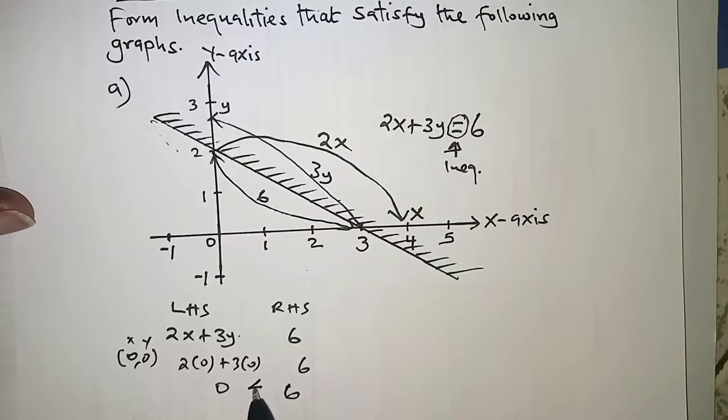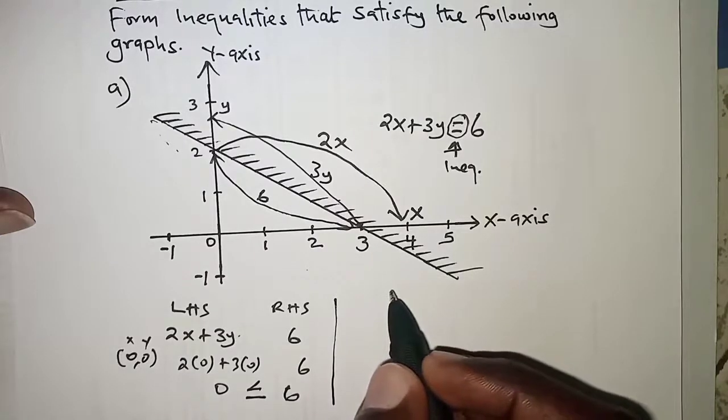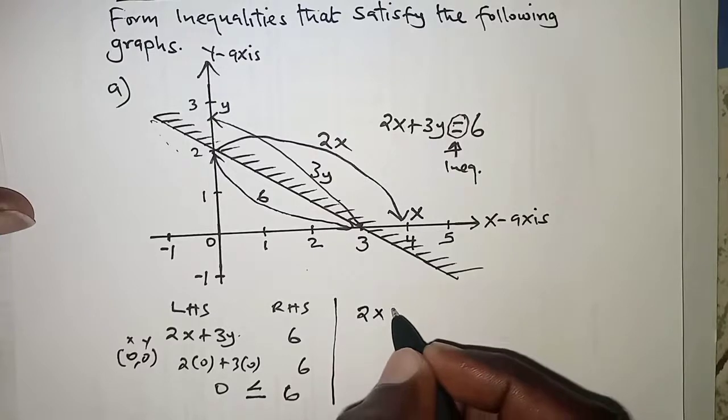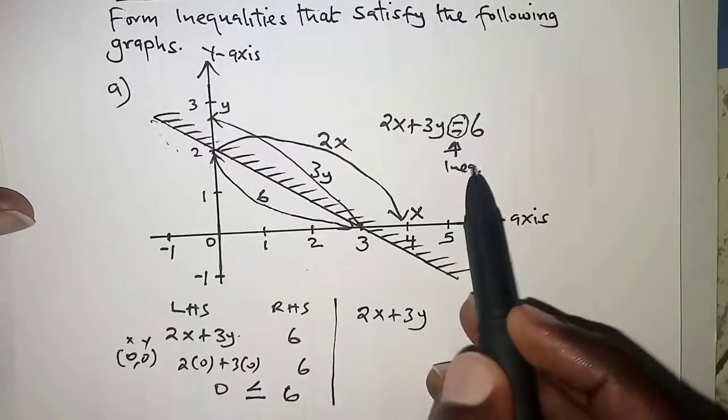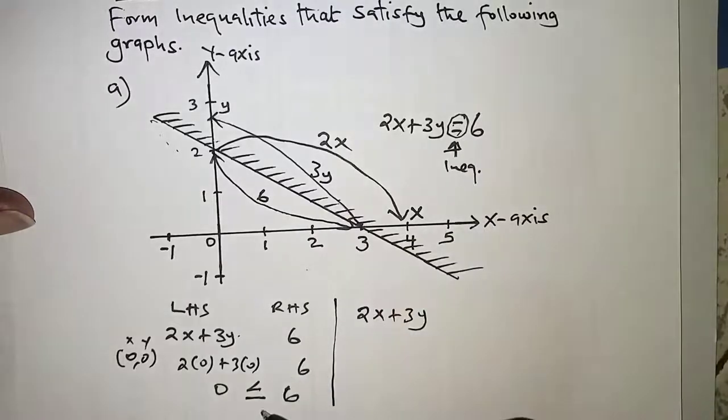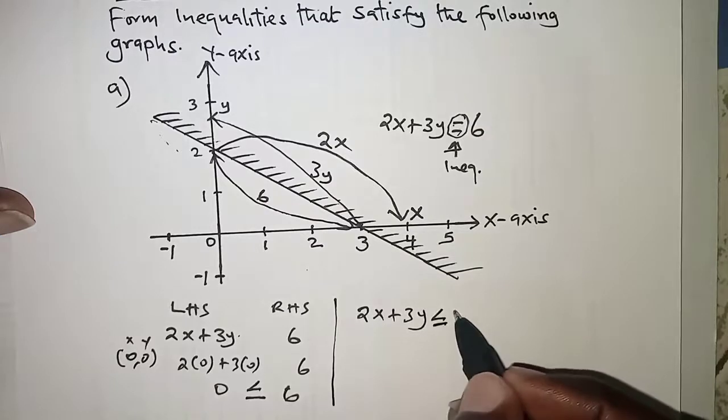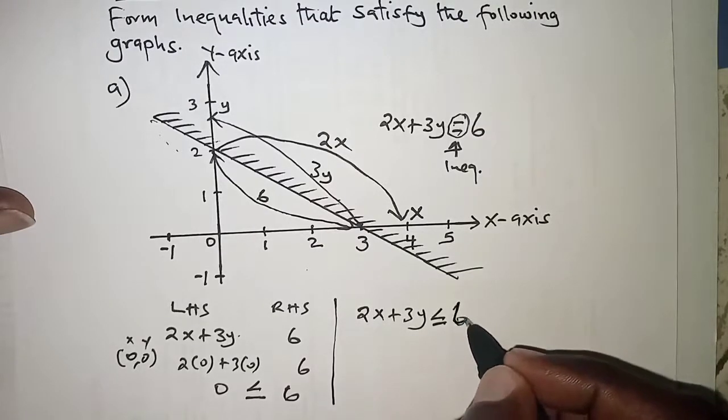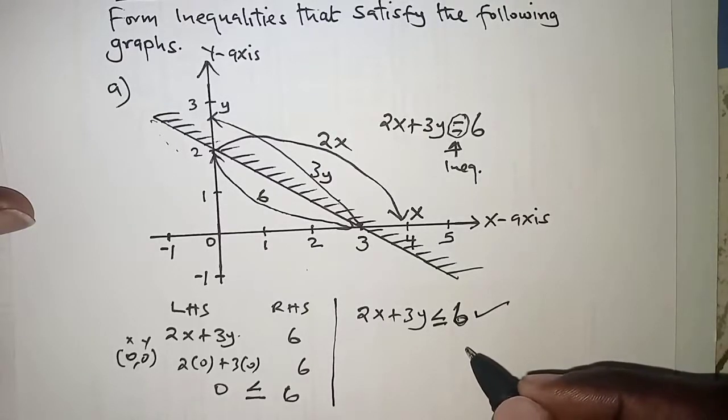Finally, we will have the inequality required as 2x + 3y, but in place of the equal sign now we have the inequality which is less than or equal to 6. So that's it for that, and the other way which is very common is to determine the gradient of this line.